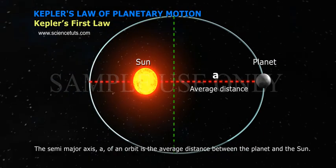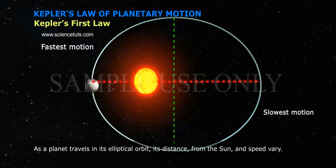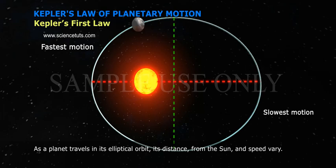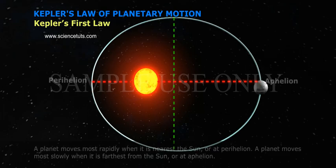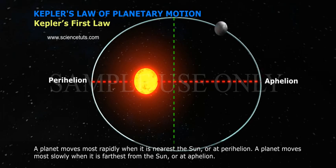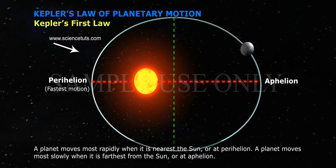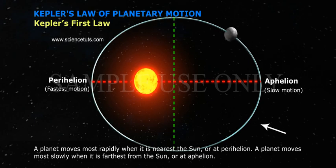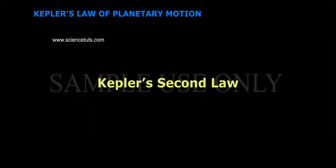As a planet travels in its elliptical orbit, its distance from the Sun and speed vary. A planet moves most rapidly when it is nearest the Sun, or at perihelion. A planet moves more slowly when it is farthest from the Sun, or at aphelion.